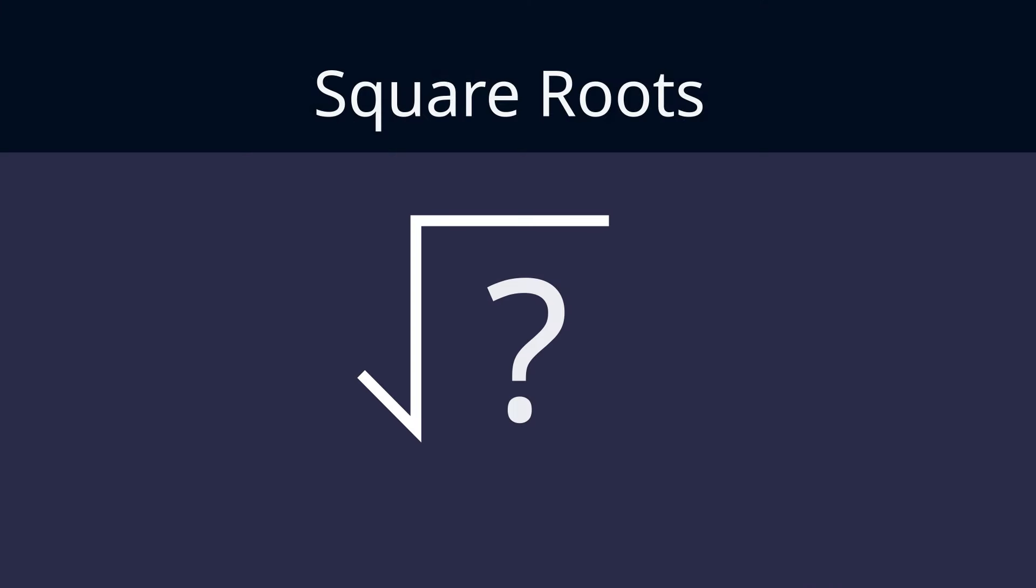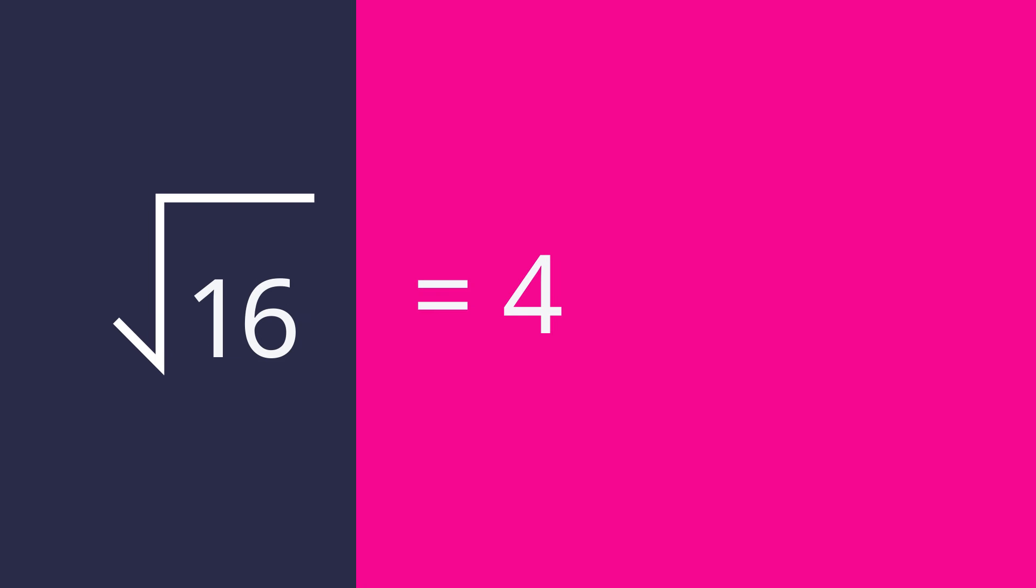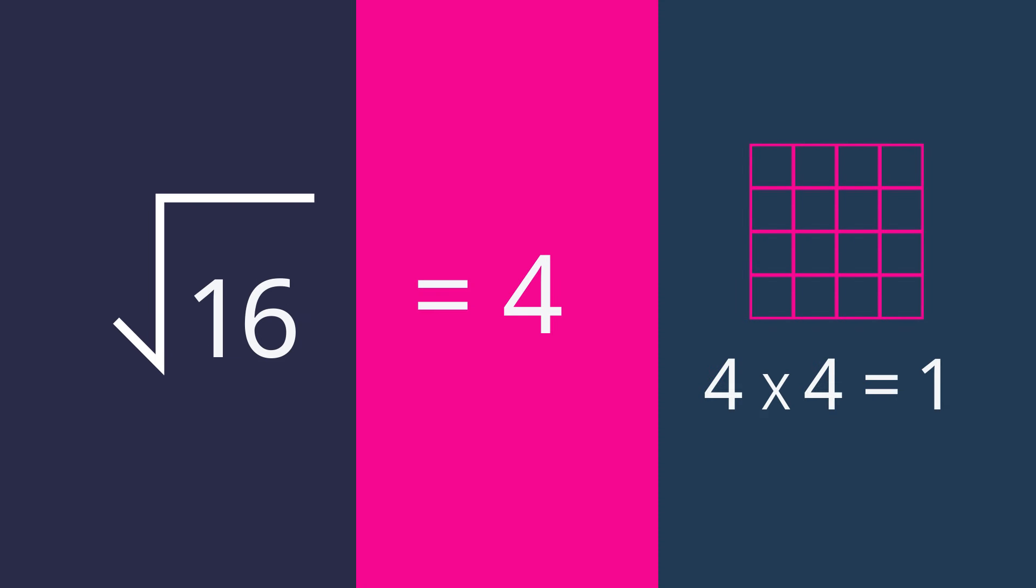Now the square root of a number asks the question, what number multiplied by itself gives me the root? For example, if we have 16, the square root of 16 is 4, because 4 times 4 equals 16.